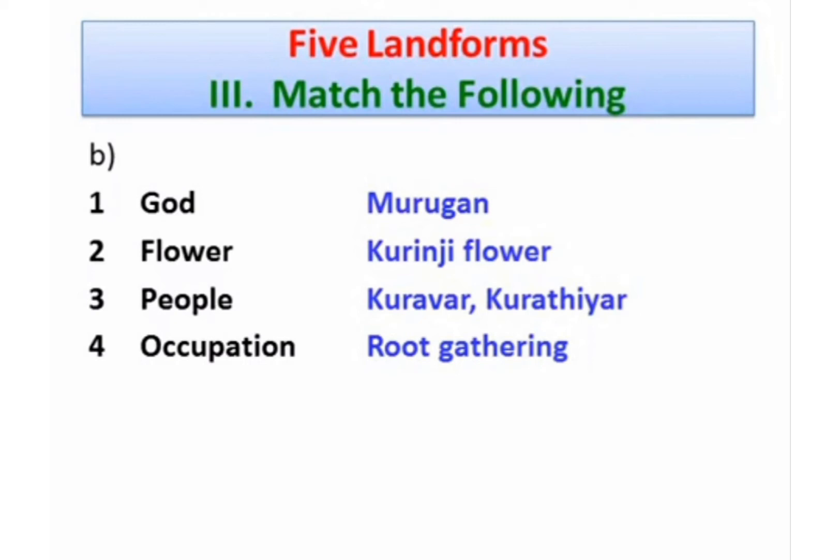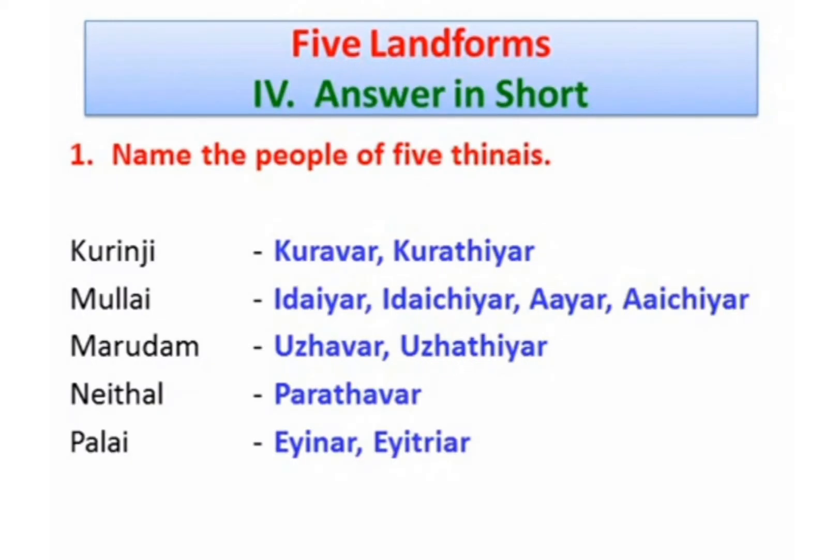Roman number four: name the people of the five Thinais. Kurunji — Kuravar, Kurathiyar. Mullai — Idaiyar, Aayyar. Marudam — Ullavar, Ullathiyar. Neidhal — Varadavar. Paalai — Einer, Eitriar.